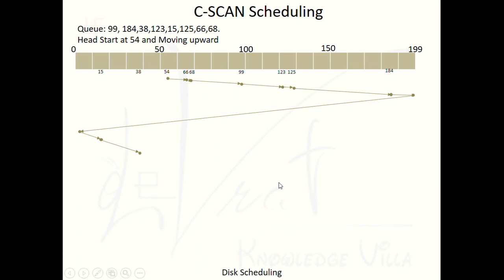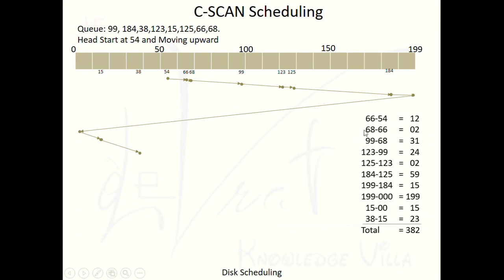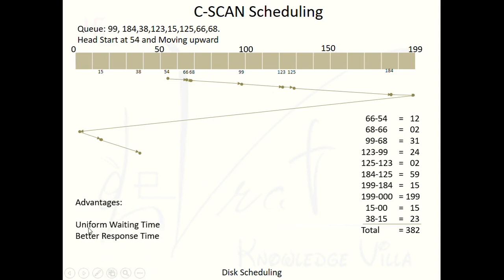The total seek time for this C-SCAN example is 382. If you need to understand how to calculate seek time, please watch our first video on the First Come First Serve algorithm, which explains the calculation process in detail.